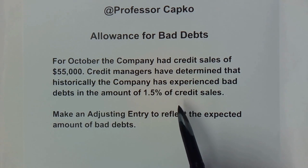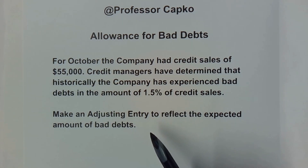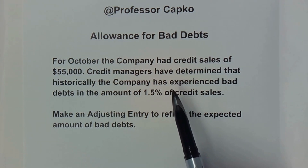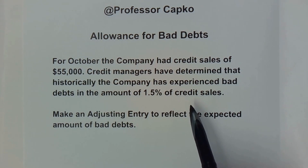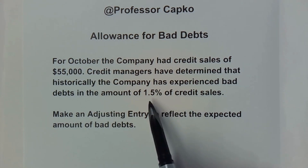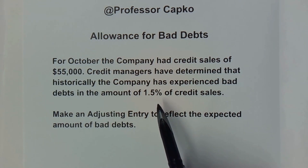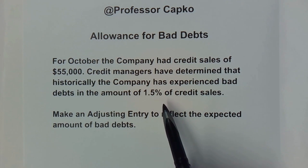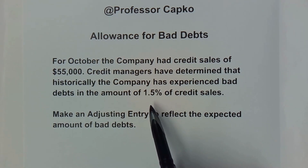Unfortunately, not everyone pays their bills. Things happen — maybe there's a bankruptcy or a change in circumstances — and sometimes some bills are not paid. Companies track that and get pretty accurate as to the amount of their credit sales they don't collect. In this case it's 1.5 percent. The company doesn't know which specific accounts will not pay, because obviously if you knew somebody wasn't going to pay you wouldn't extend them credit.